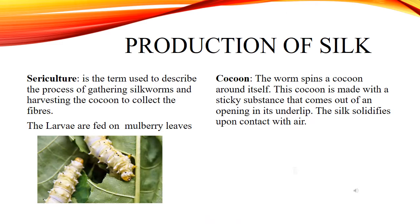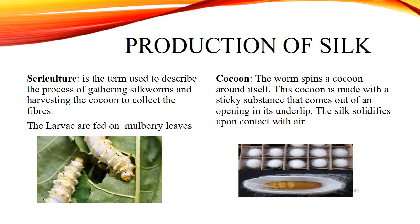Production of Silk Fibers. Sericulture is the term used to describe the process of gathering silkworms and harvesting the cocoon to collect the fibers. The larvae are fed on mulberry leaves. The worm spins a cocoon around itself, made with a sticky substance that comes out of an opening in its under lip. The silk solidifies upon contact with air.